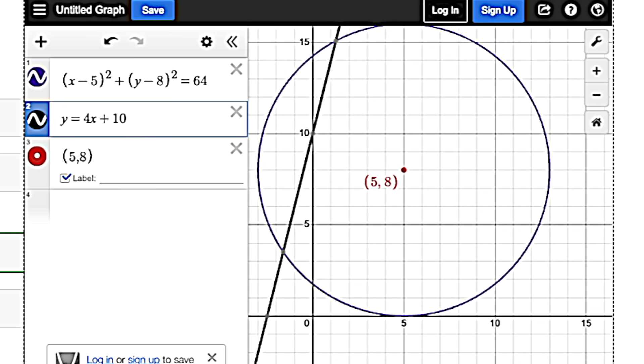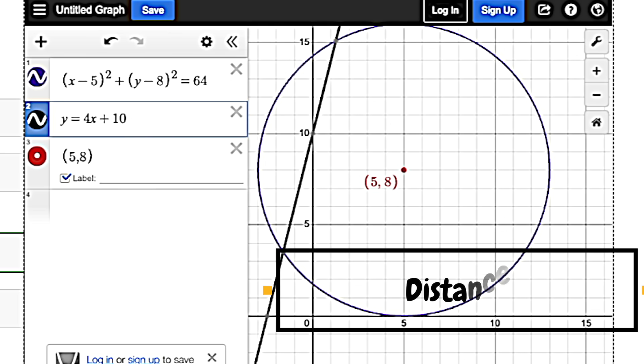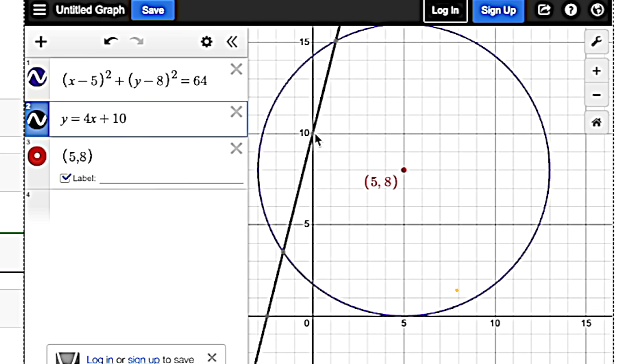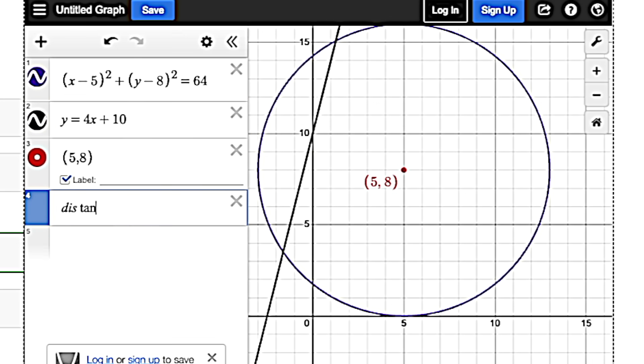You can also use Desmos for distance instead of the distance formula. So let's say I wanted to figure out the distance between this y-intercept and the center of the circle here. I could just put in distance. And then just like with mean, we're going to put our two points. So we have five, eight, make sure to put a comma. And then what was that? Zero, 10. And just like that, it's going to put in the distance for us, which is fantastic.